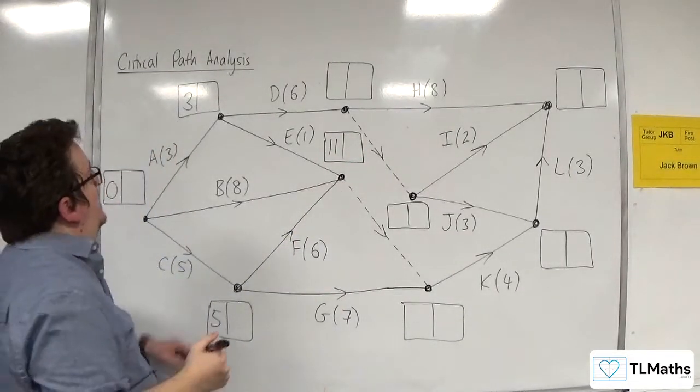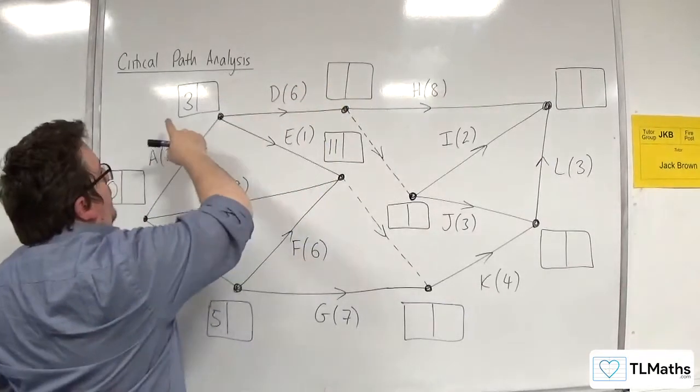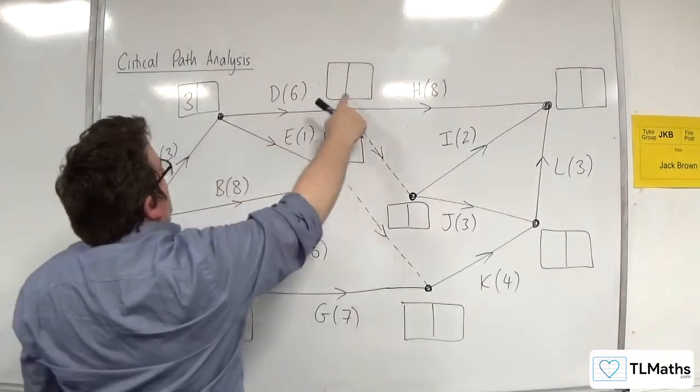So let's look at this box next. So there's only one route in. 3 plus 6 is 9.